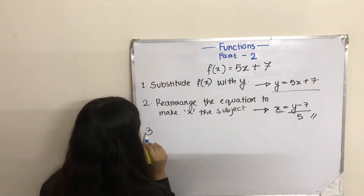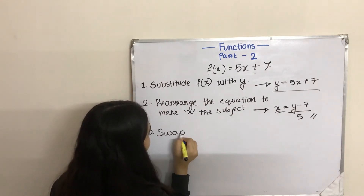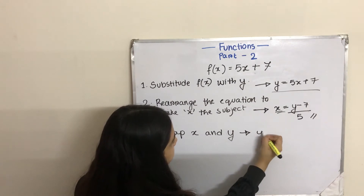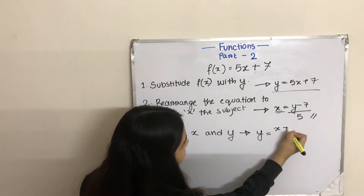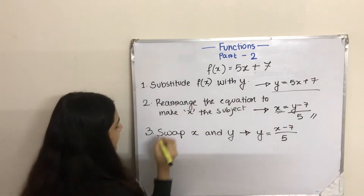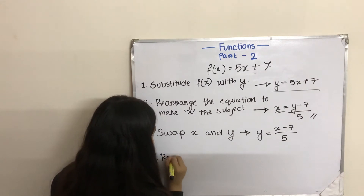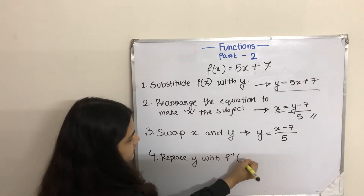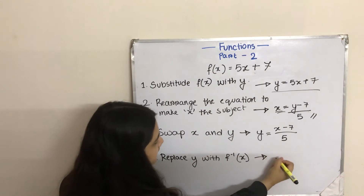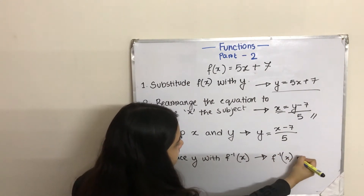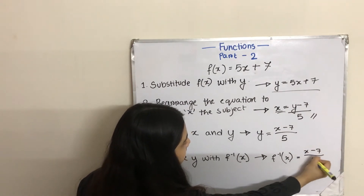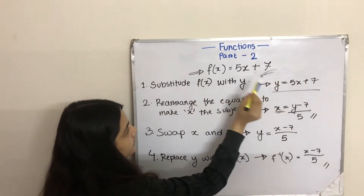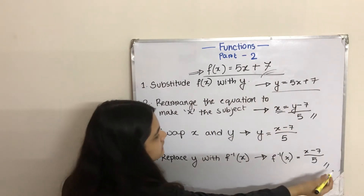Our next step will be to rearrange this equation to make x the subject. So if we do that, it will be x equals to y minus 7 divided by 5. Here, we just made x the subject from this equation. Then our third step will be to swap x and y. If we do this, it will be y equals to x minus 7 divided by 5. And finally, we will replace y with f inverse x. So f inverse x equals to x minus 7 divided by 5. This is how we find the inverse of this function.